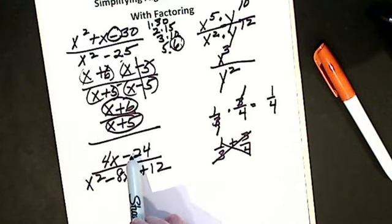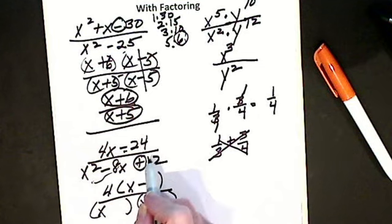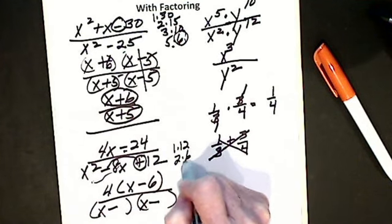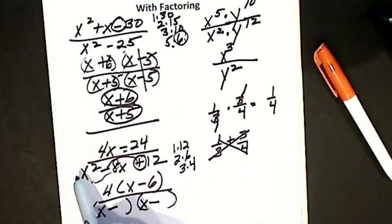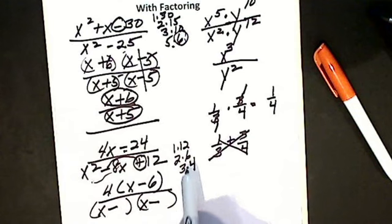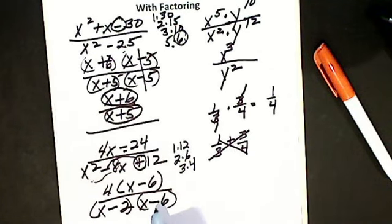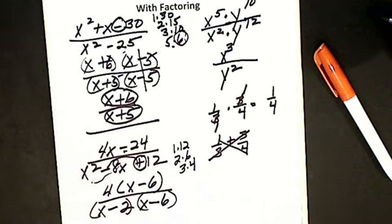I factor my denominator. The factoring is usually a little easier when it's inside a problem because I'm hoping one of these will be x minus 6. I have x, x. The plus sign tells me the signs in my answer are the same — and looking at the middle, this is minus, minus. With no coefficient in front, I ask which pair do I add or subtract to get an 8. It's 6 and 2. I check by FOIL: x times x is x squared, minus 6 minus 2 gives minus 8, and I get plus 12.